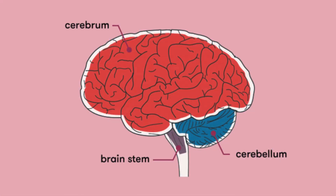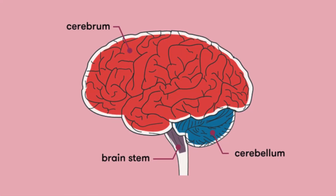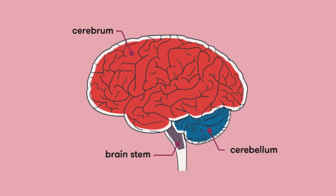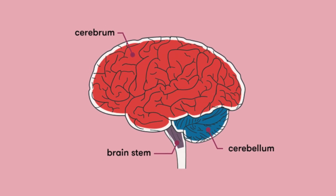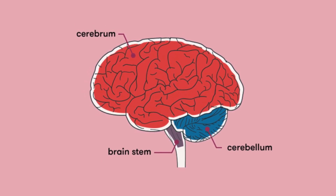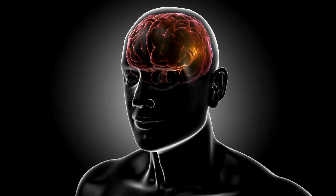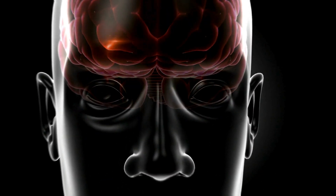The brain is divided into three main parts: the cerebrum, the cerebellum, and the brainstem. Each plays a crucial role in how we interact with the world.